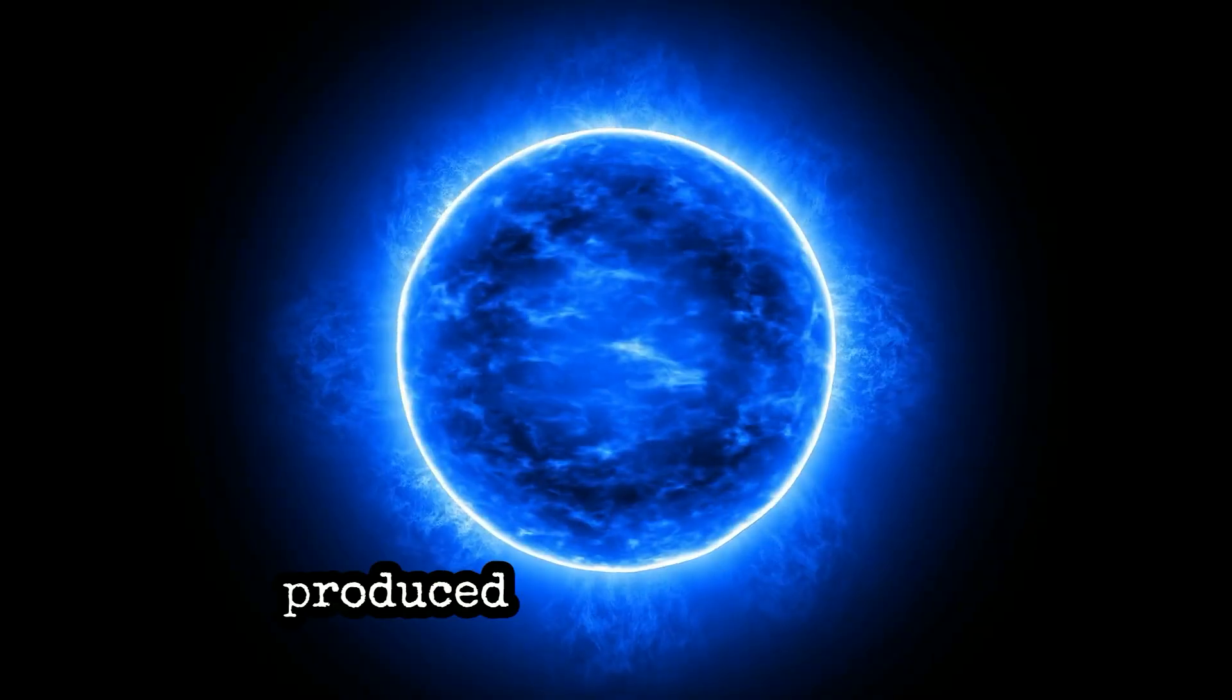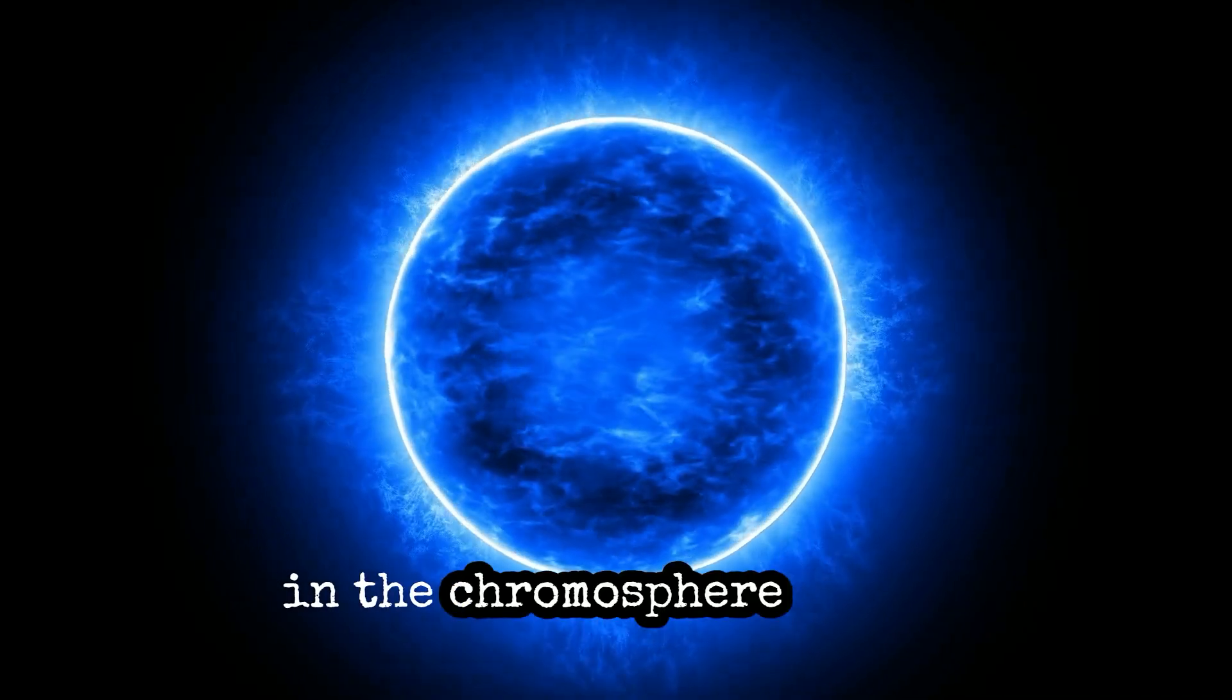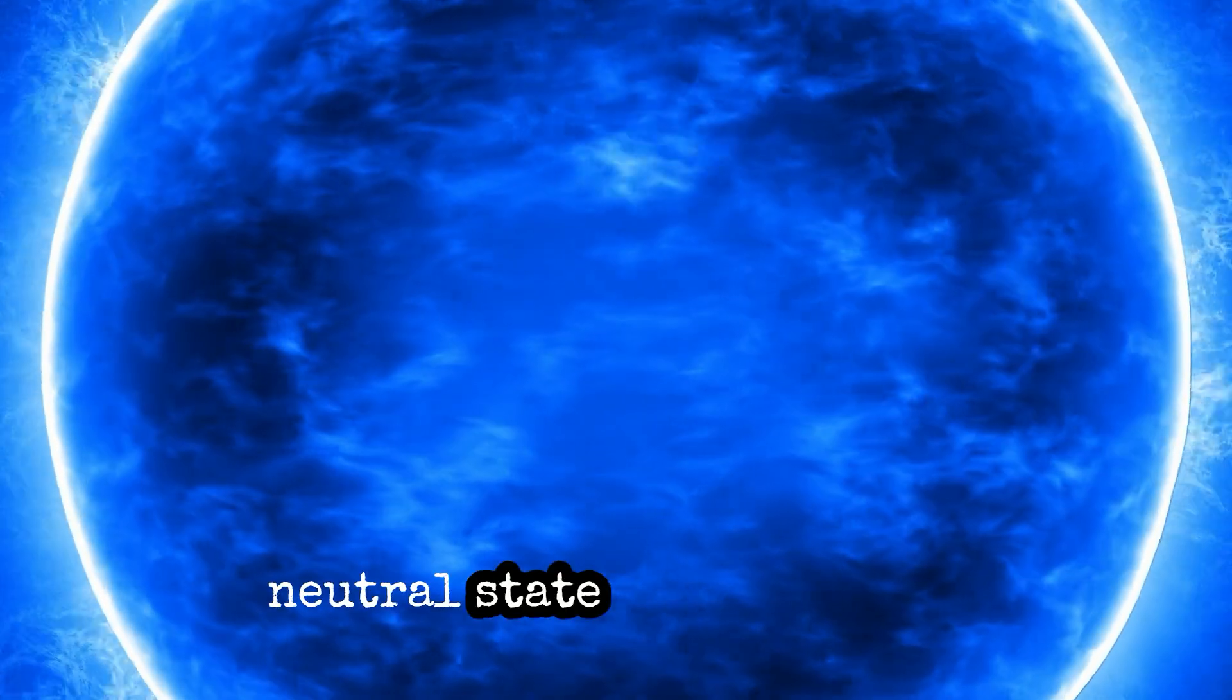Infrared radiation is produced as a result of the increase in electron density in the chromosphere due to the ionization of hydrogen, which is originally in a neutral state in the plasma.